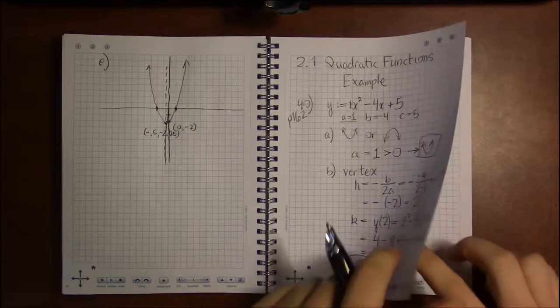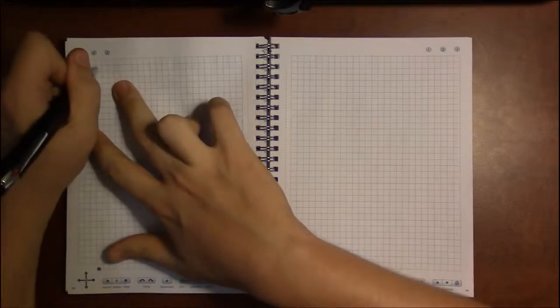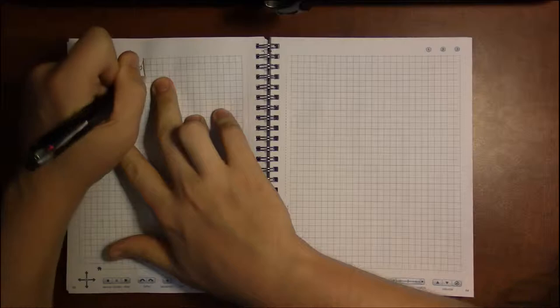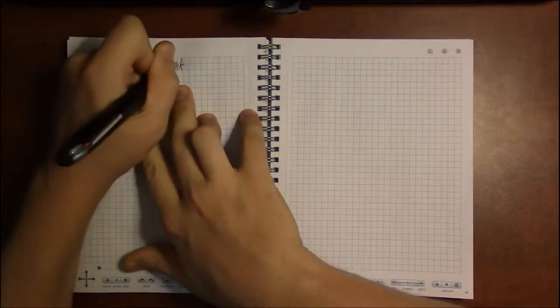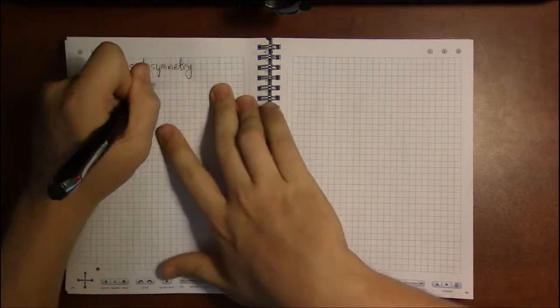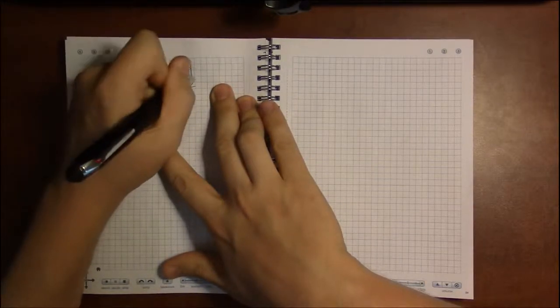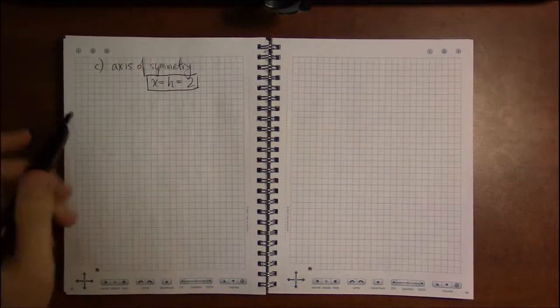So that was answer a, that's answer b. Let's write up c. The axis of symmetry is just x equals h, just x equals h. And h in our case is 2, so it's the vertical line x equals 2.